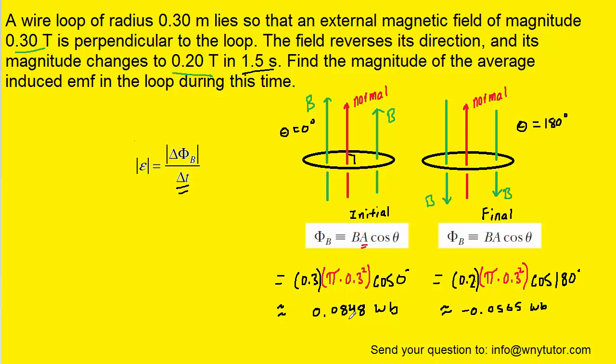When you calculate these, you should get an initial magnetic flux of 0.0848 Weber and a final magnetic flux of negative 0.0565 Weber.